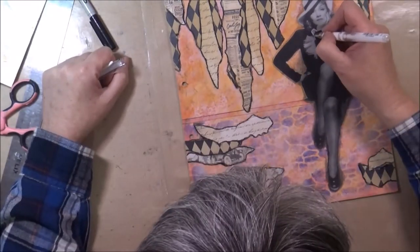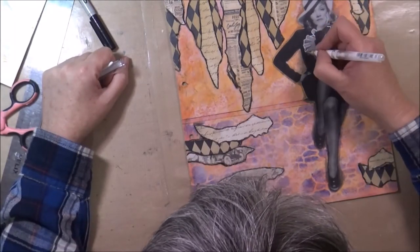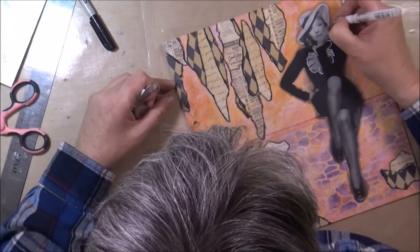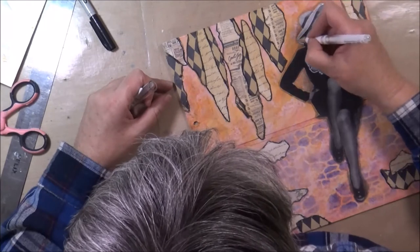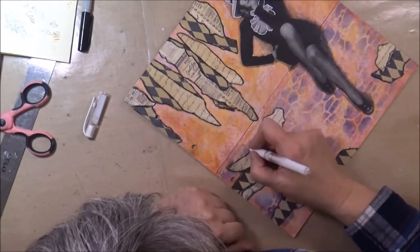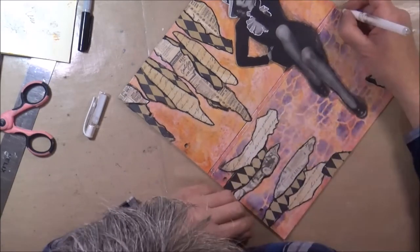Next, I used my white Signo pen to just outline her little ruffles and her hat. Not too much—I'm not going to do anything else to her face or body or anything.